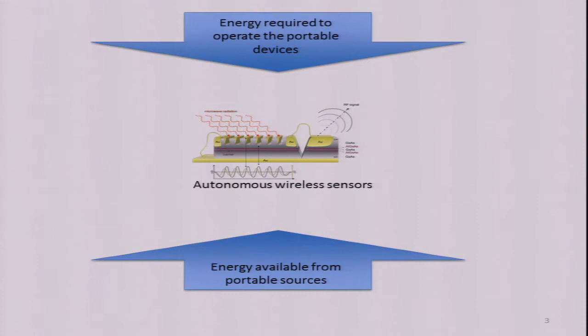On doing this, we realized that there were two major constraints. On one side, we had to deal with the energy required to operate the portable devices. On the other hand, we had to deal with the energy available from portable sources. And the lower one is the realm of what is today known as energy harvesting.